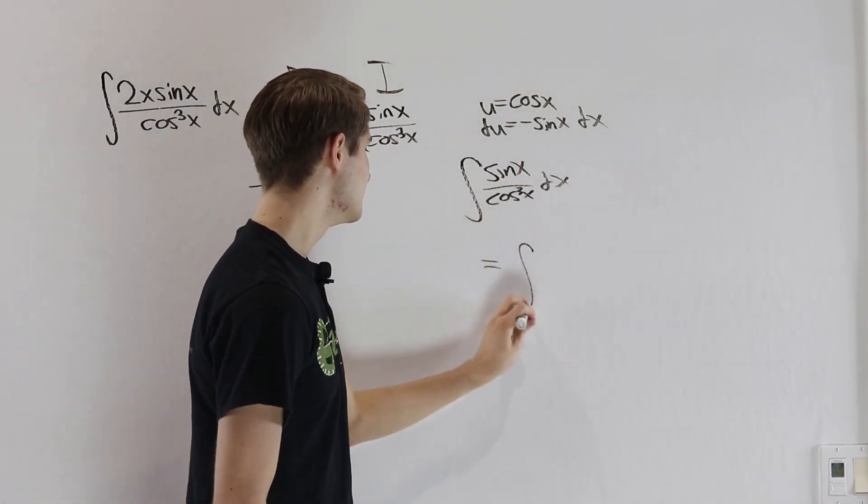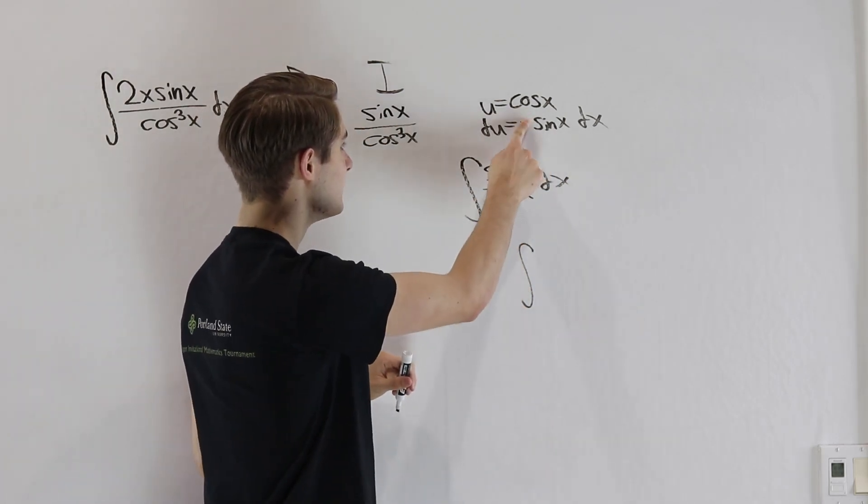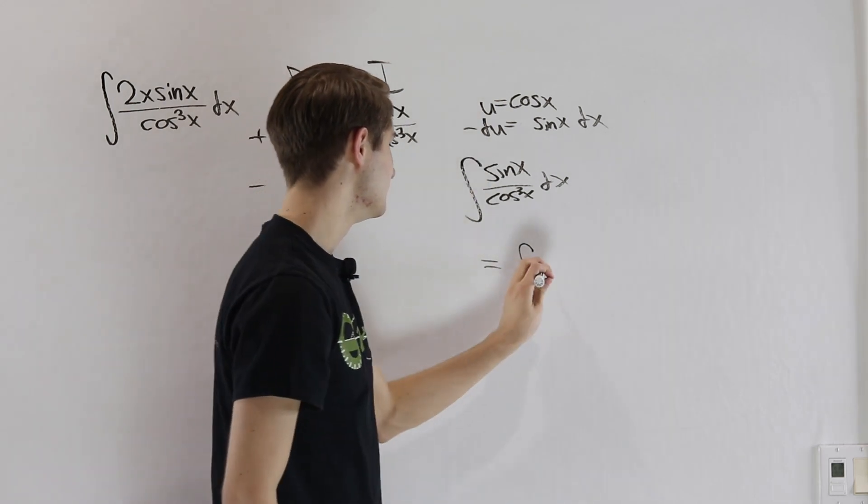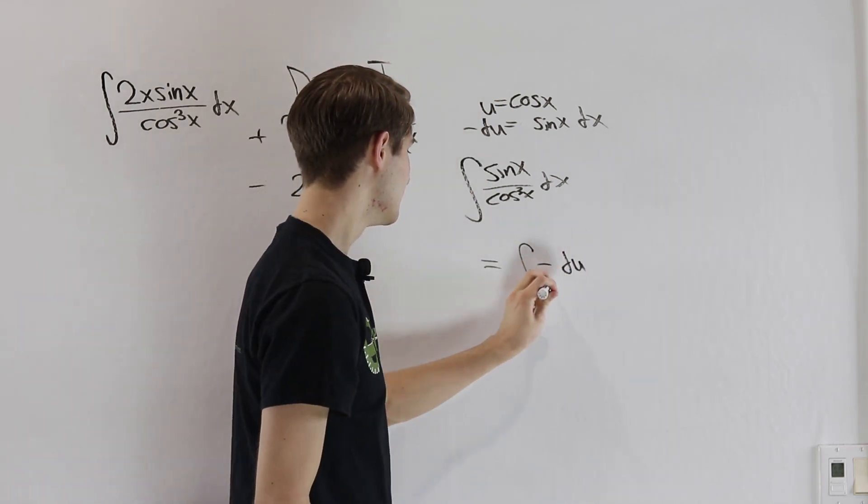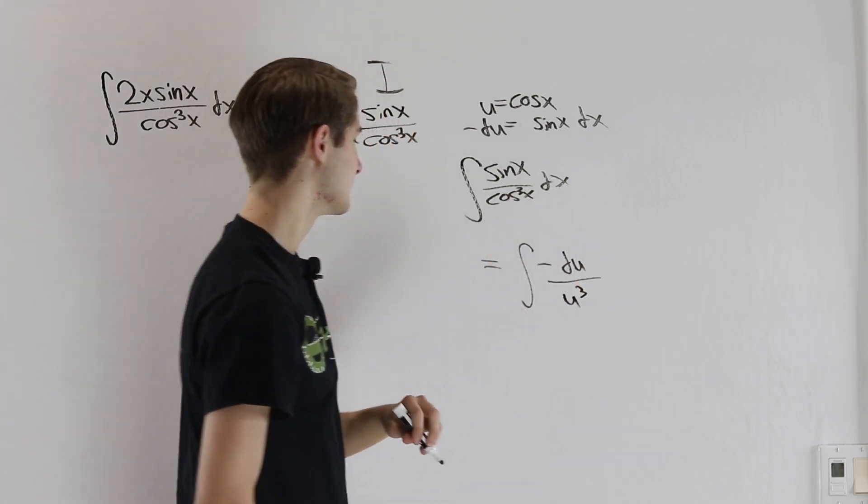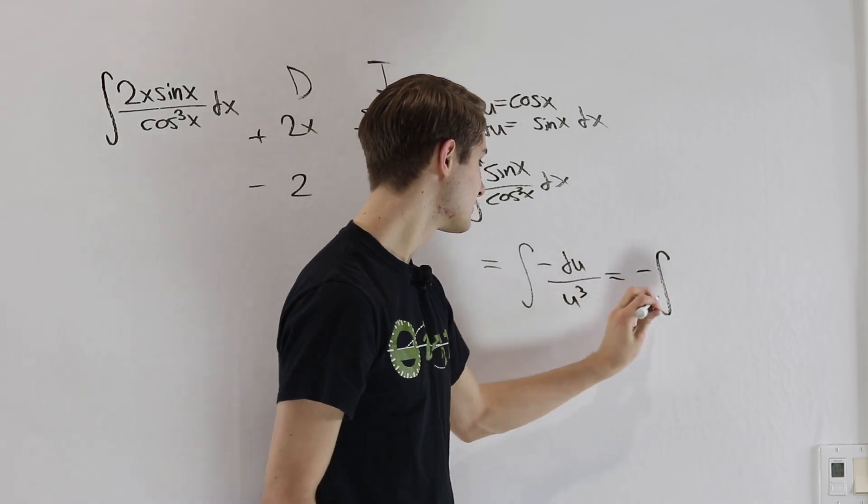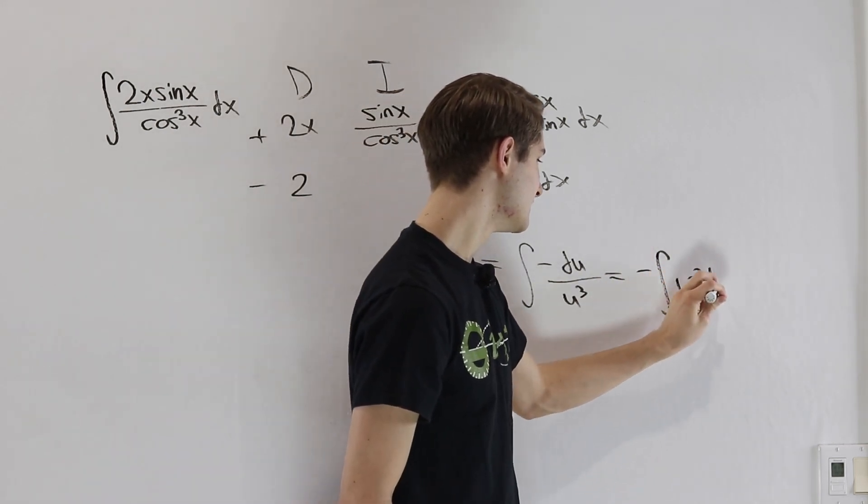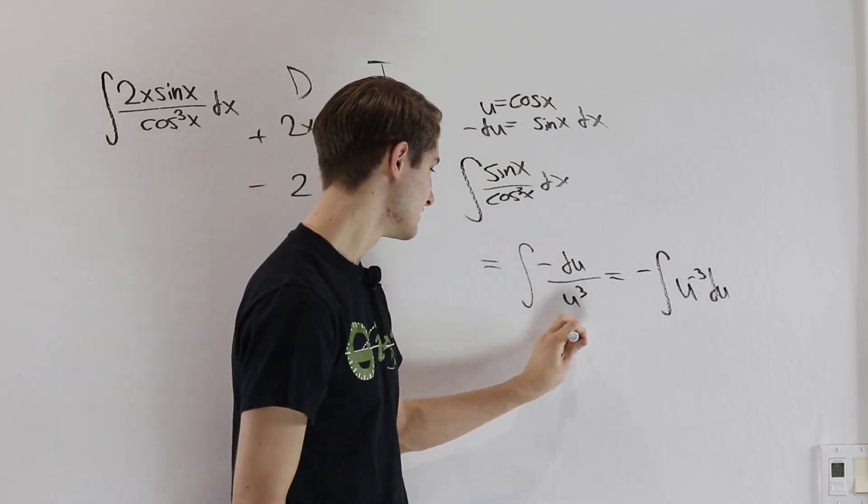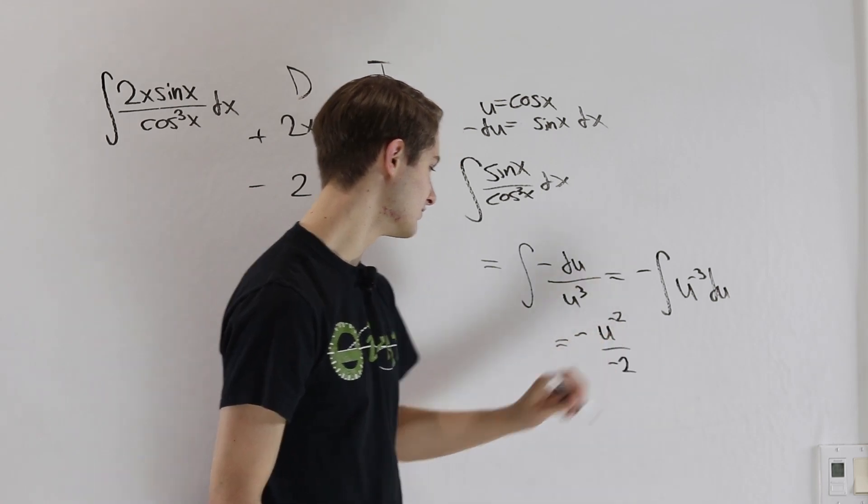If we plug all of this in, we'll get that this equals the integral of, on the top sine of x dx, is going to be, if we move this negative to the other side, a negative du. So we can put that on the top and then we'll divide by u is our cosine x and then cubed. We can rewrite this as negative the integral of u to the negative 3 du. We integrate this using the power rule. That will give us negative u to the negative 2 divided by negative 2.